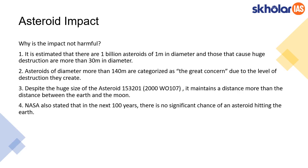Scientists believe that this new asteroid would not bring any destruction to the earth. There are billions of asteroids in the solar system — it is estimated that 1 billion of them are just 1 meter in diameter. For any asteroid to make significant destruction it has to be at least more than 30 meters in diameter. NASA categorizes any asteroid with diameter more than 140 meters as a great concern asteroid.